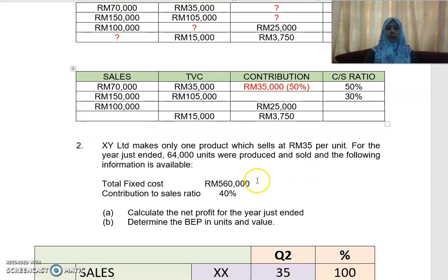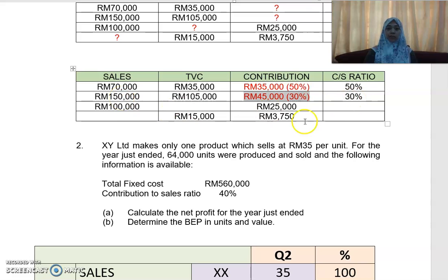For the second item, you are given sales and total variable cost, so you can work it out as RM150,000 minus RM105,000. Alternatively, the CS ratio is 30%, so 30% of RM150,000 gives you RM45,000. That is your contribution of RM45,000.